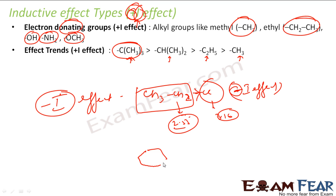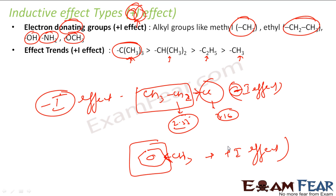Always think from the system perspective. For example, benzene with a CH3 group: the CH3 group is adding electrons to the system, so it is a plus I effect. In the system, if somebody is subtracting electrons, that is minus I effect. If somebody is adding electrons to the system, that is plus I effect. We are bothered only about the system.